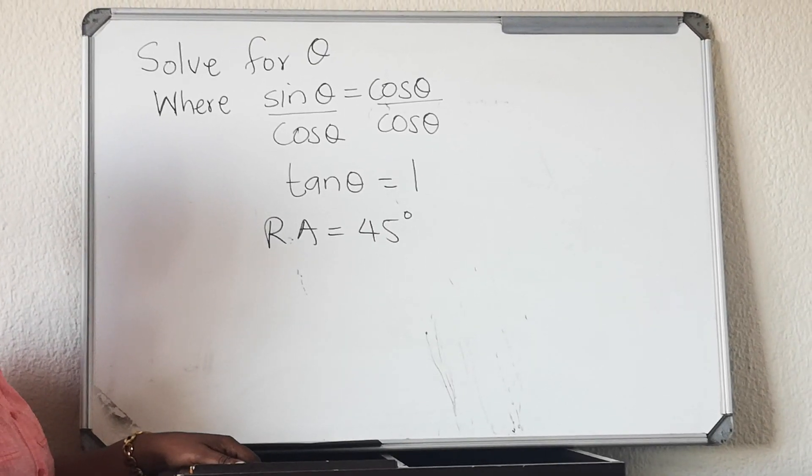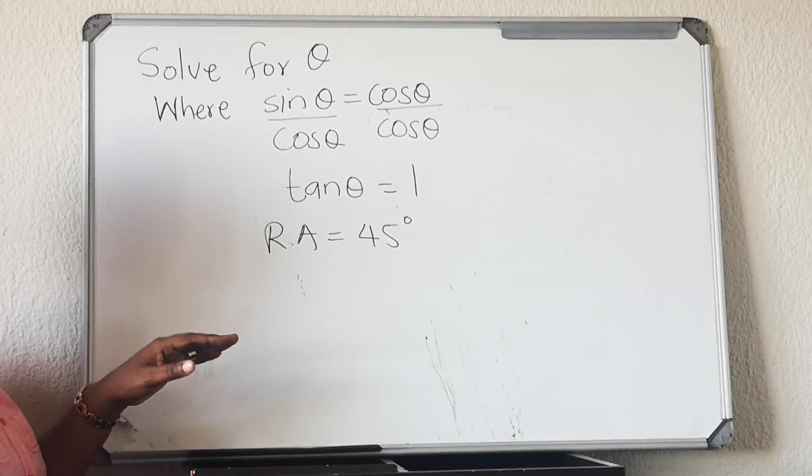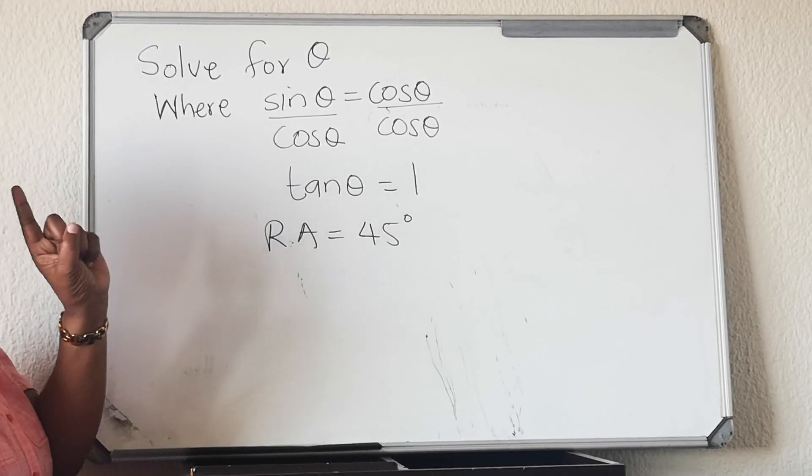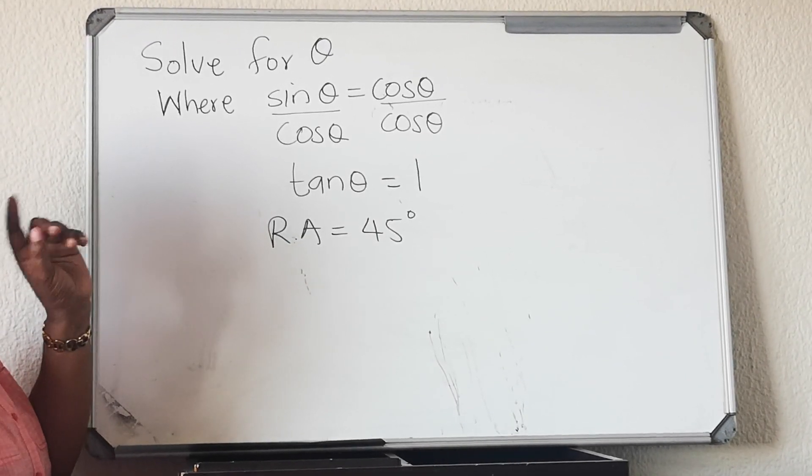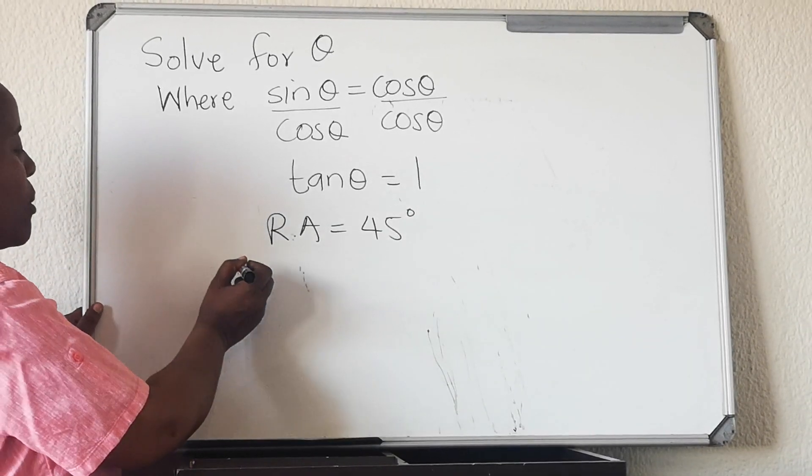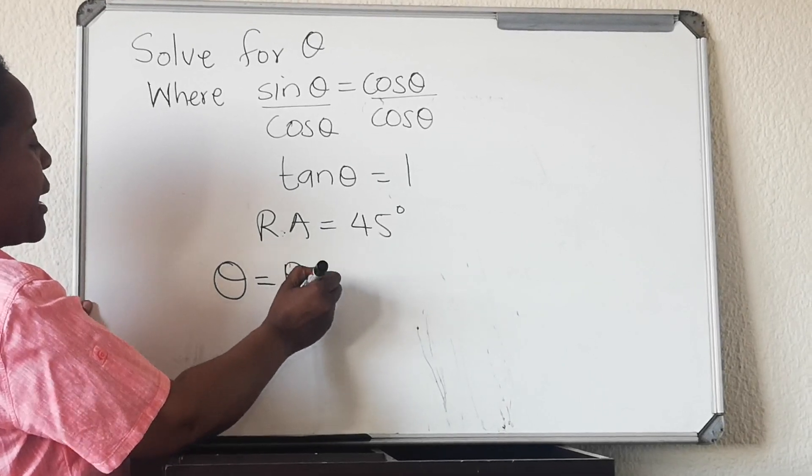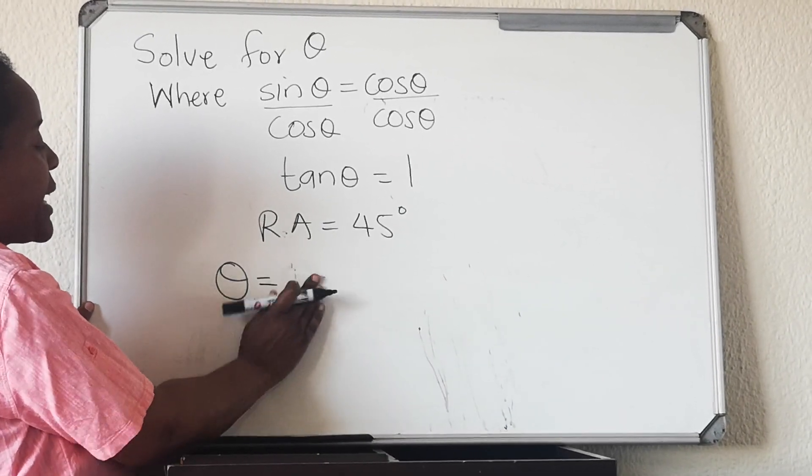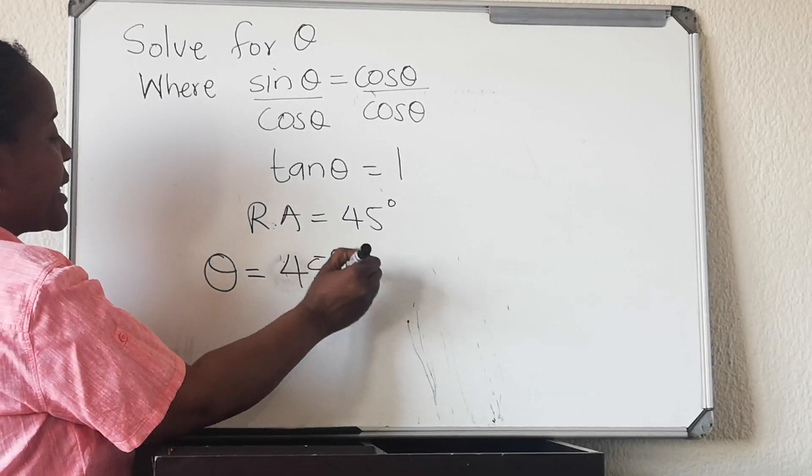At the beginning of our lesson we talked about the different solutions that you have for tan. You have one solution. You need to memorize those solutions before you go to the exam. So for tan we said θ equals reference angle. In this case our reference angle is 45, so you're not gonna write reference angle, you're gonna write 45 degrees.